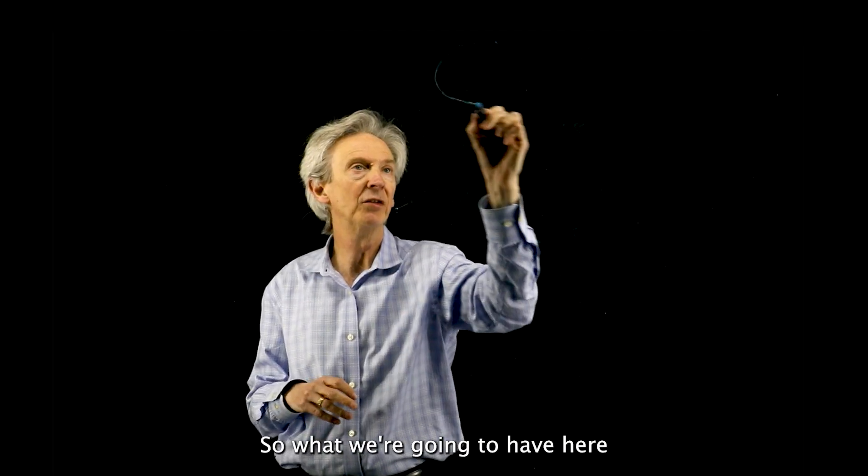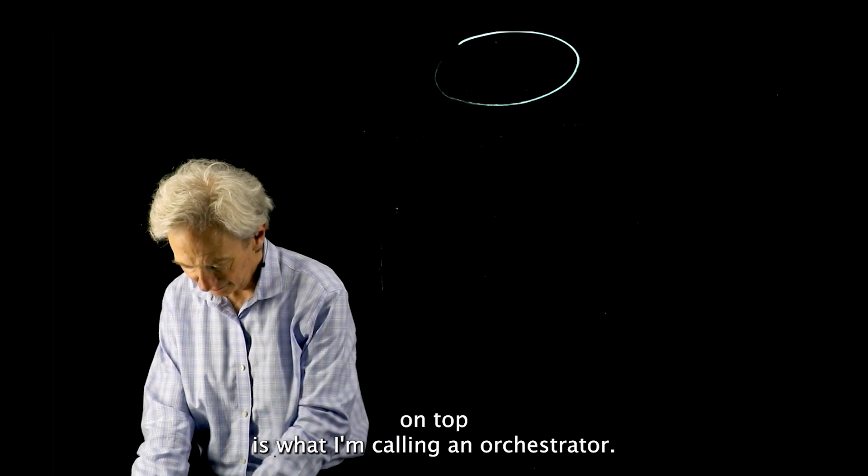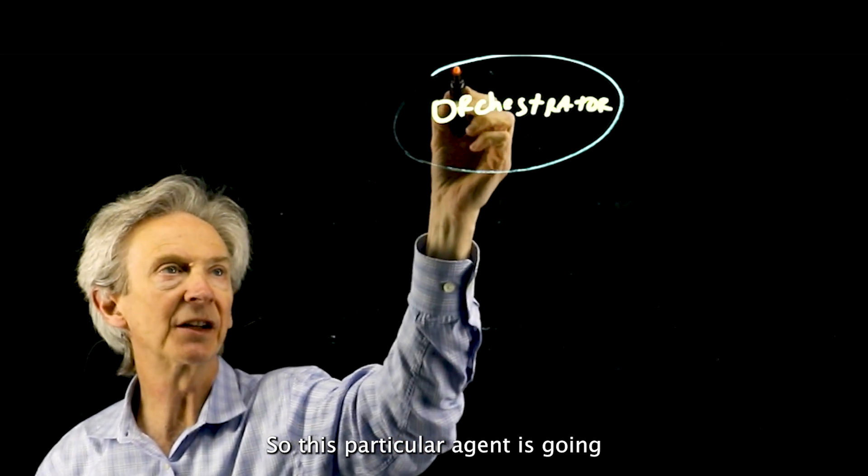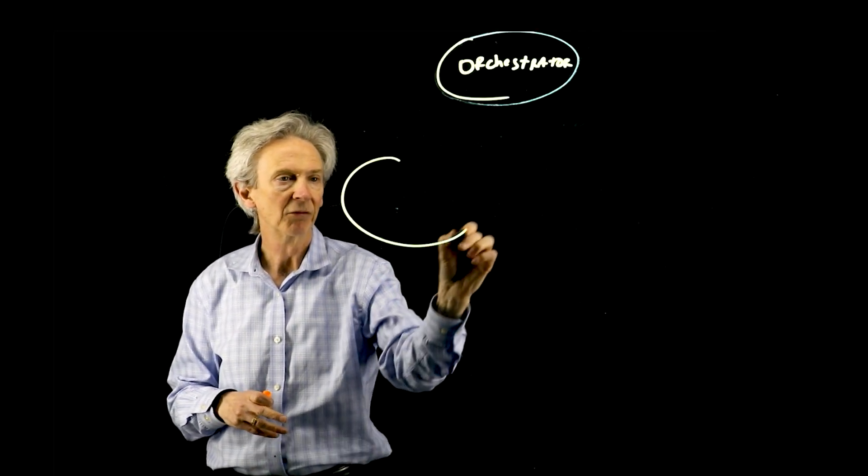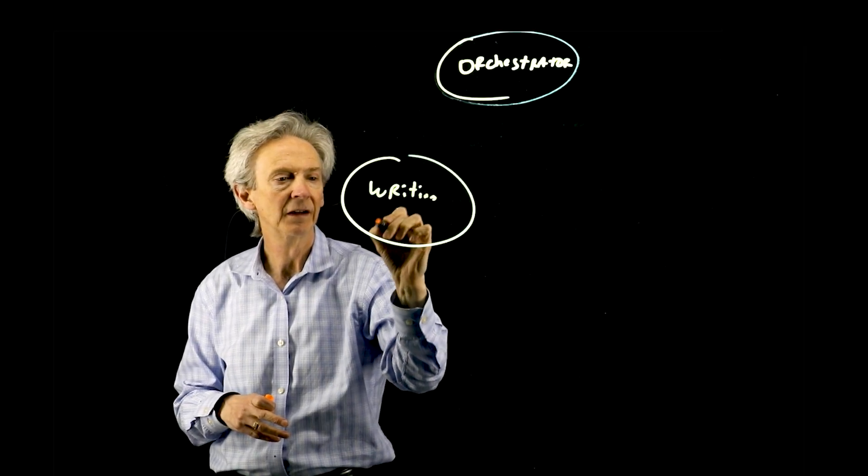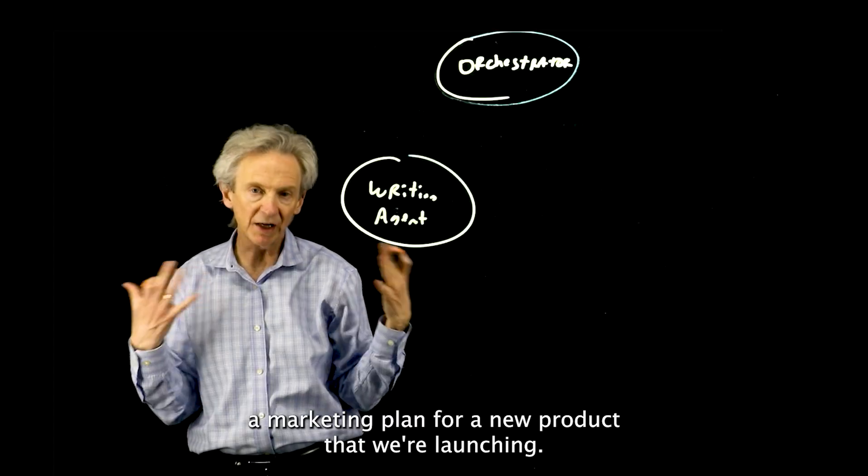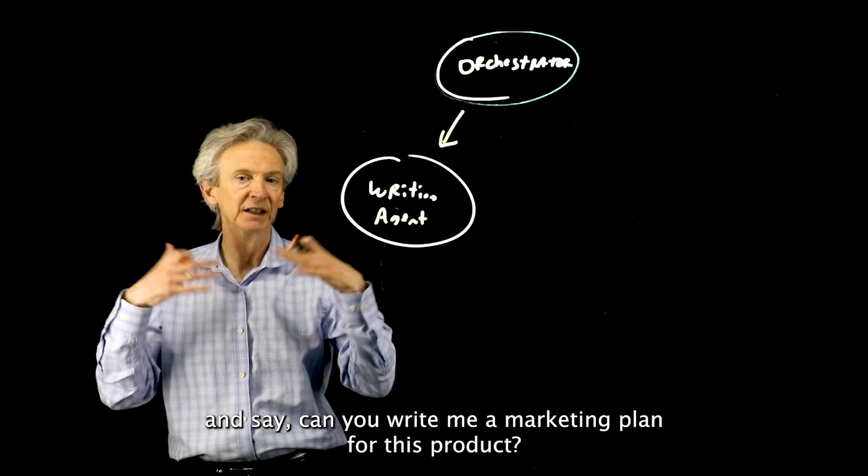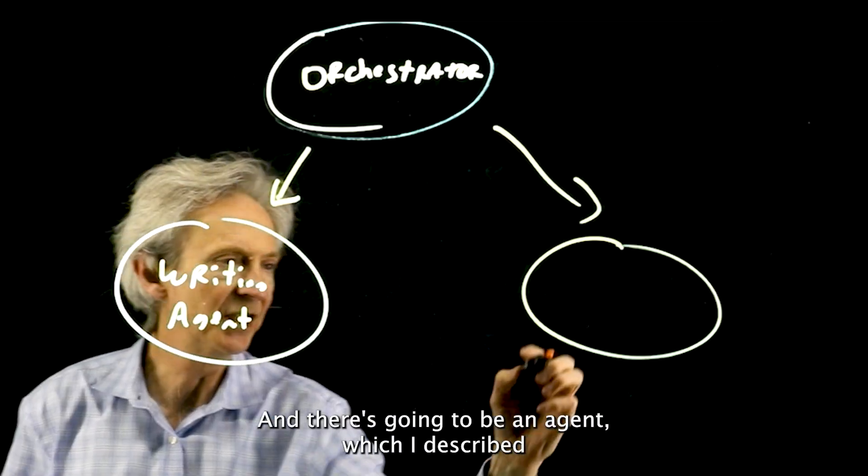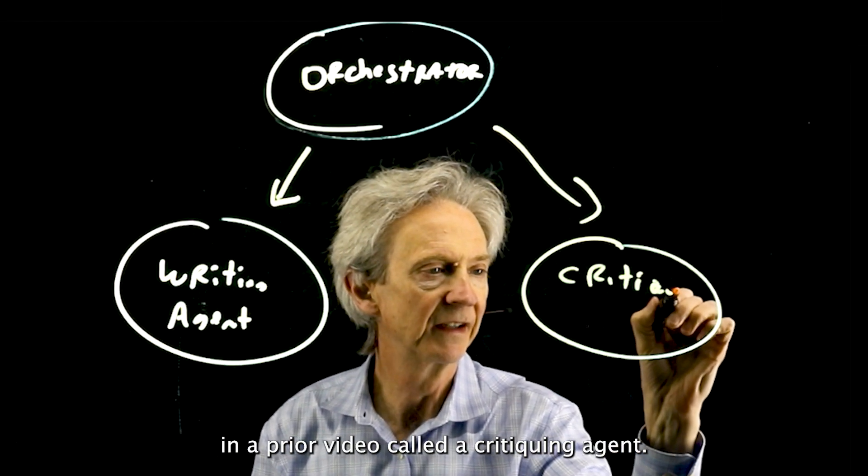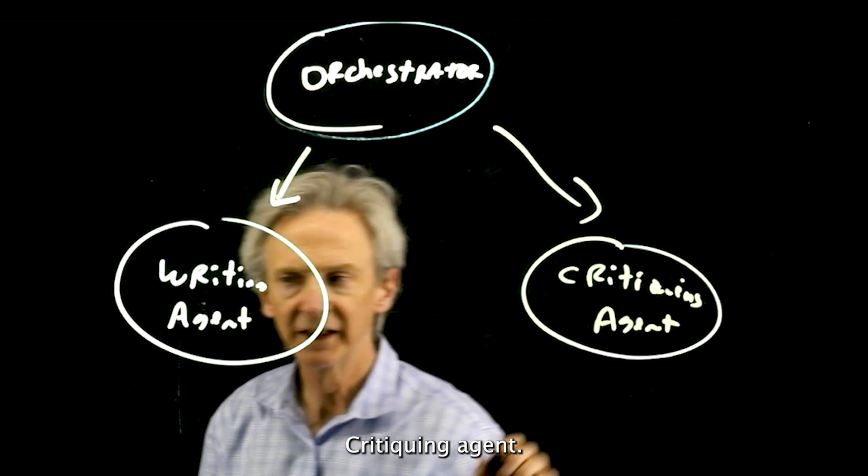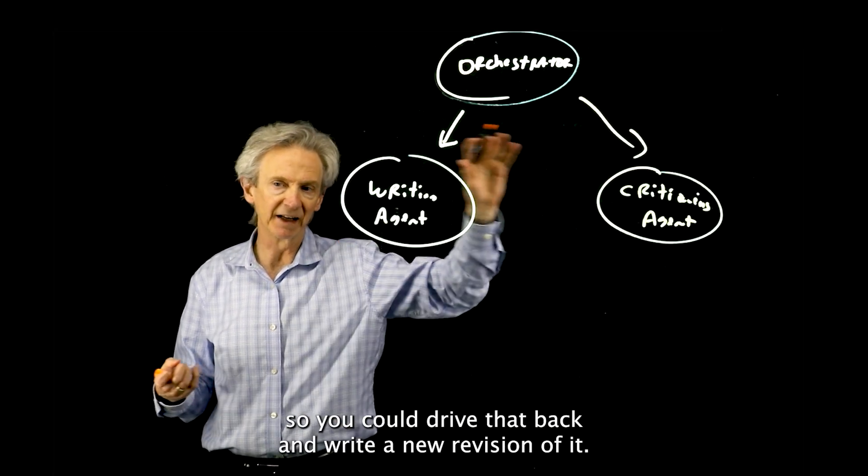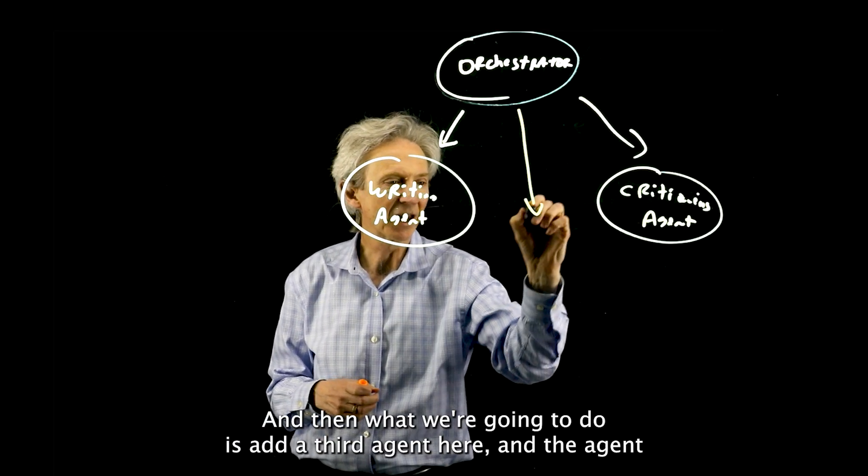So let's structure this a little bit. What we're going to have here on top is what I'm calling an orchestrator. This particular agent is going to organize the whole process. We're going to have a writing agent. The use case is writing a marketing plan for a new product that we're launching. So the orchestrator is going to call the writing agent and say, can you write me a marketing plan for this product? And there's going to be an agent, which I described in a prior video, called a critiquing agent. This agent will read the marketing plan, read the product description, and provide feedback into that marketing plan.